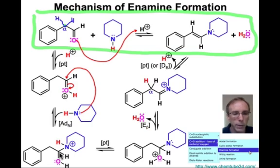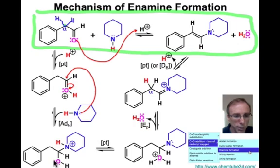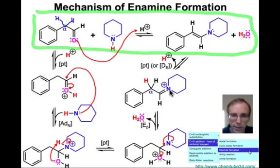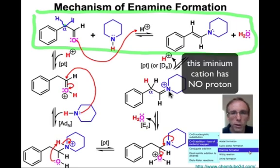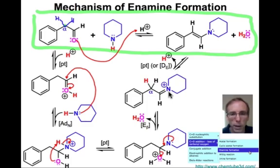That tetrahedral intermediate needs to lose water. The hydroxyl group can become the leaving group it needs to be by protonating that oxygen — the proton coming intramolecularly from that positively charged nitrogen. Now we're set up to do the beta elimination. Just as before, we make the iminium cation with the carbon-nitrogen double bond. But there's an important difference at this point: this iminium cation no longer has a hydrogen attached to nitrogen, so the mechanism cannot simply continue in the direction of making an imine, and something else has to take place.